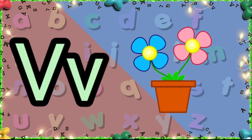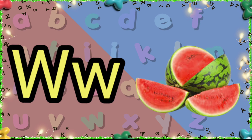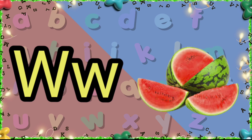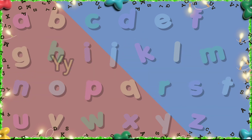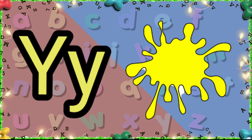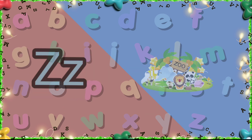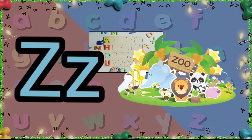V is for vase. W is for watermelon. X is for xylophone. Y is for yellow. Z is for zoo.